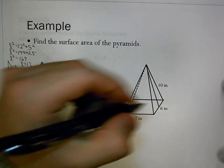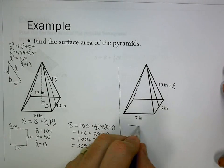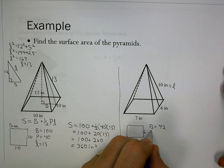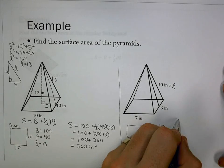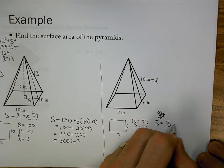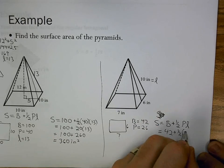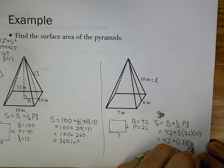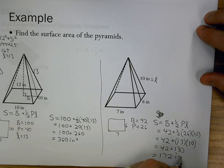The next problem gives us the slant height to start, so we skip finding it. The base is 6 by 7, so base area = 42 and perimeter = 7 + 6 + 7 + 6 = 26. Surface area = 42 + ½(26)(10) = 42 + 130 = 172 inches squared.